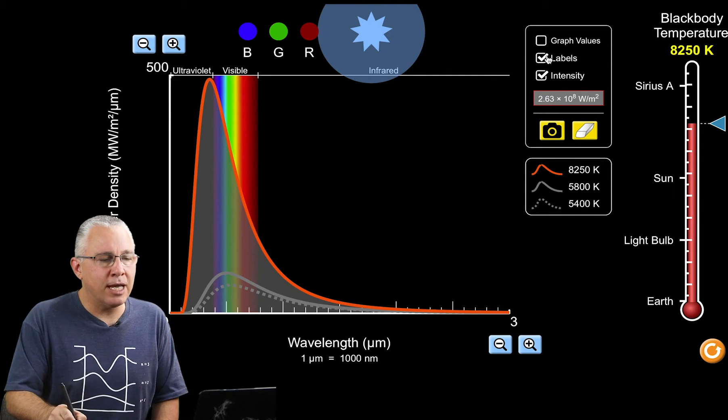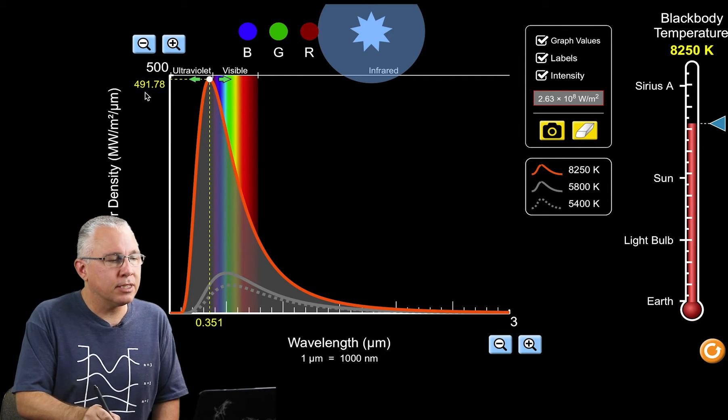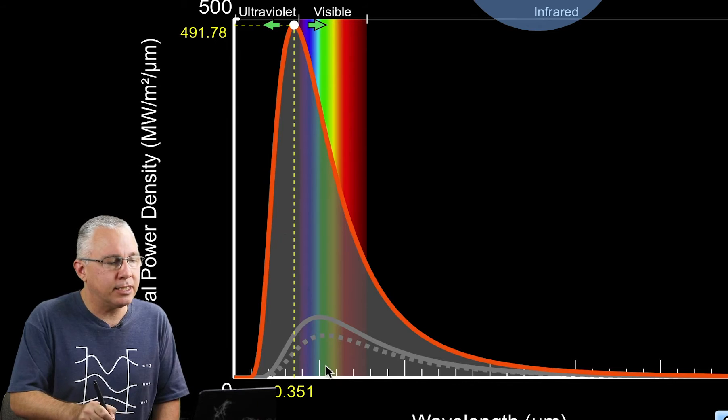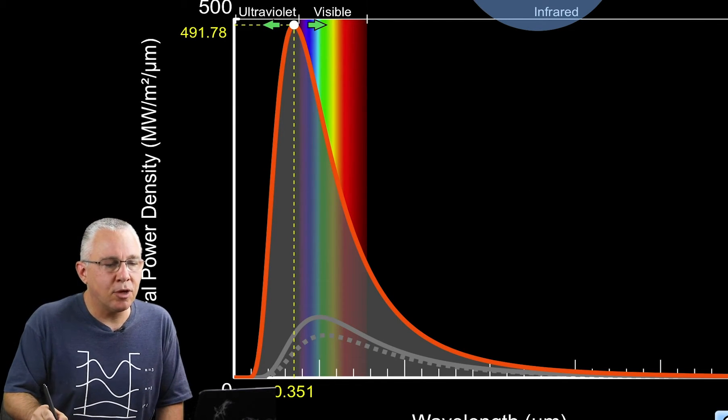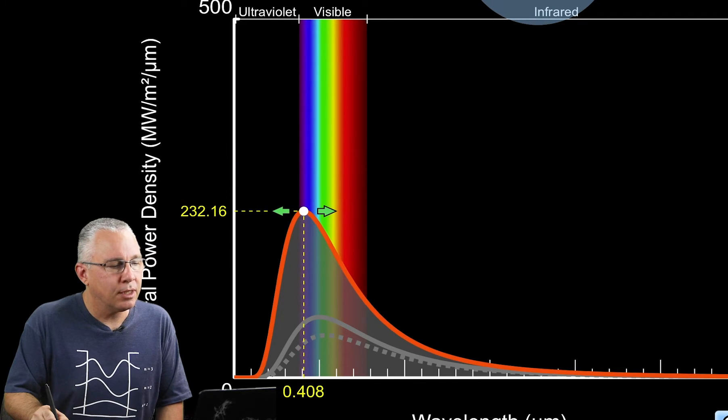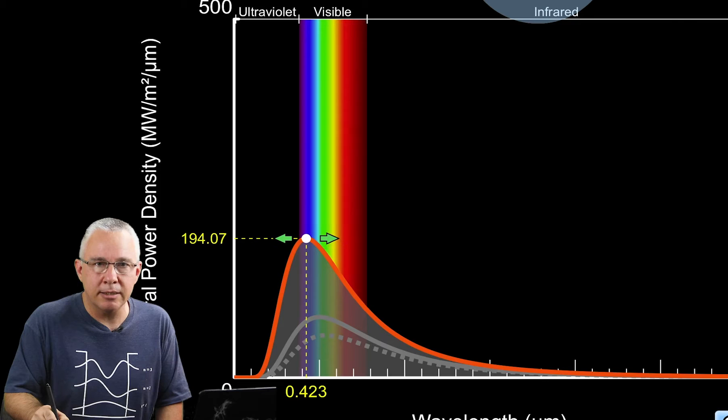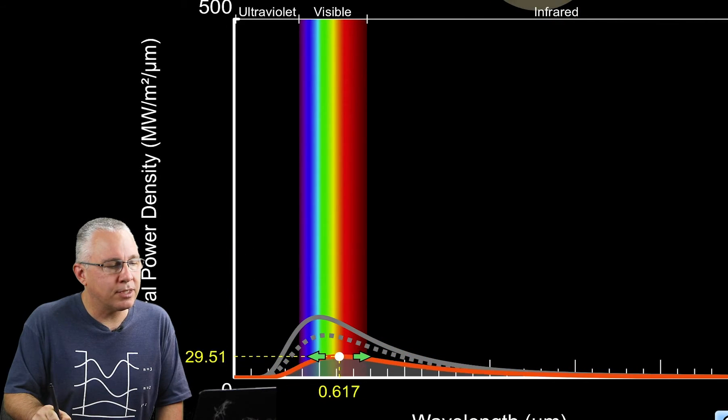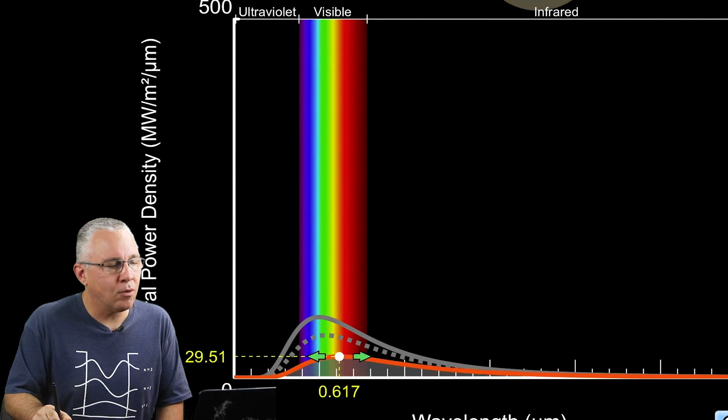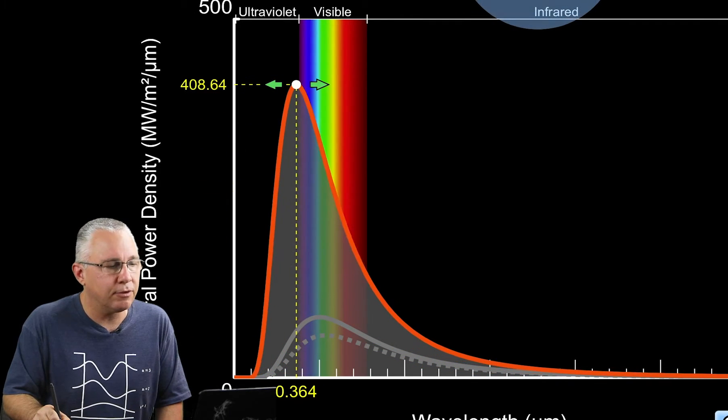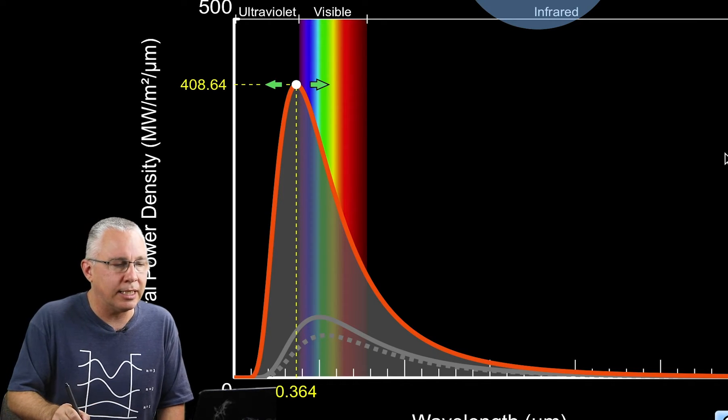If I turn on our graph values, you can see the value of our wavelength and intensity. As I drop the temperatures and move across, both scales change. The peak intensity shifts and it almost looks like an inverse relationship, and it is an inverse relationship.